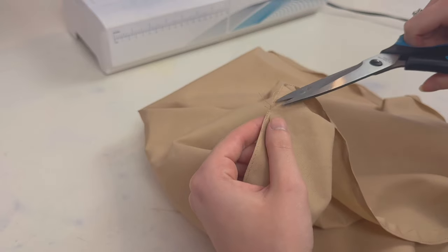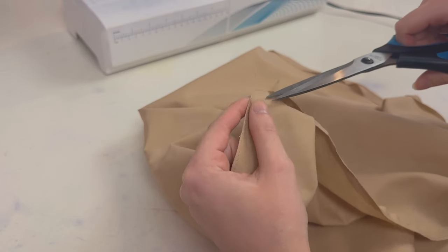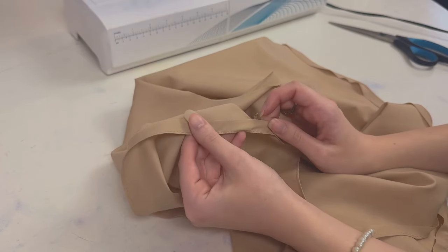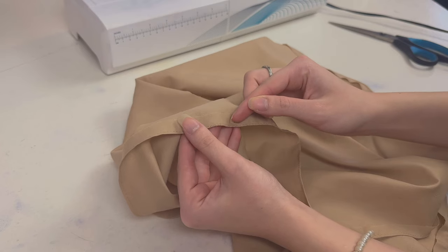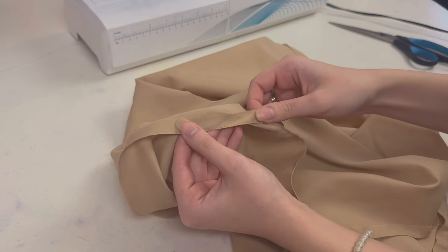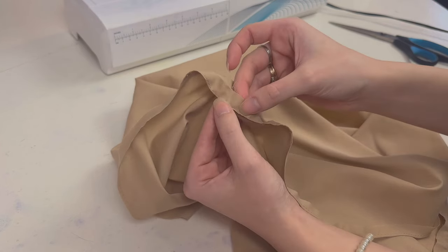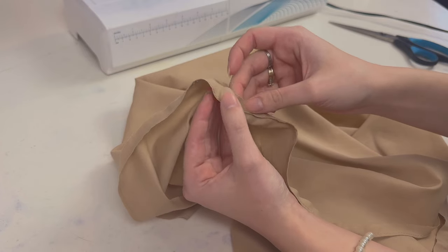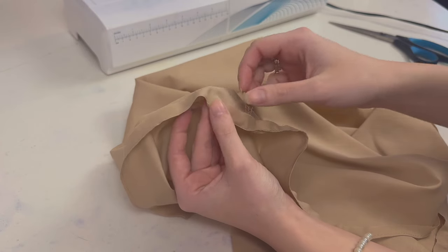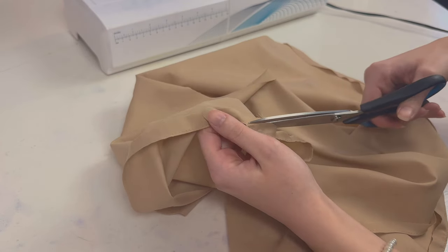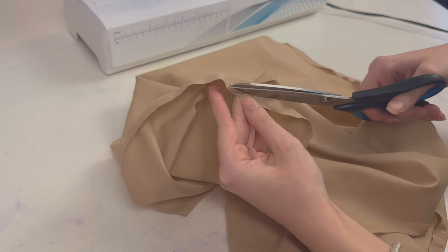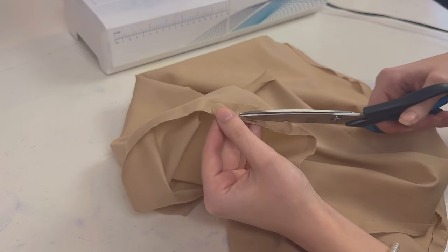Now of course you're going to trim off your thread and the next thing you're going to want to do is actually trim off and leave like one eighth of an inch next to that seam line. So trim off everywhere around that, really go as close as you can but don't accidentally trim off your seam.